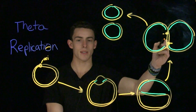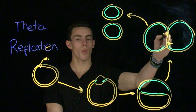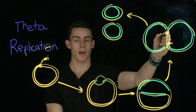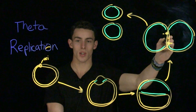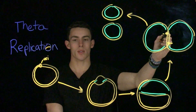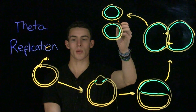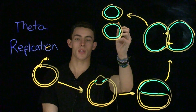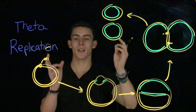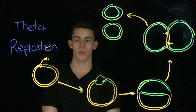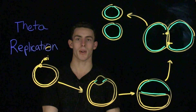As replication continues further, the two origins of replication from each strand of parental DNA approach each other, and when they actually reach each other, the two strands are separated and released as two identical daughter molecules of DNA. Thus, when the parental cell undergoes replication or binary fission in the case of bacteria, each daughter cell yielded will have the same genetic information as the parent.